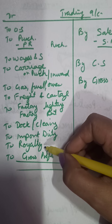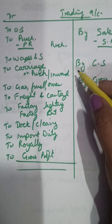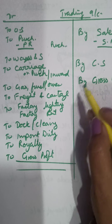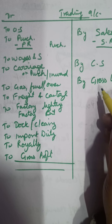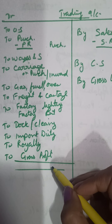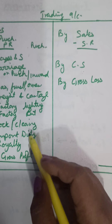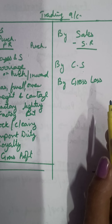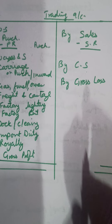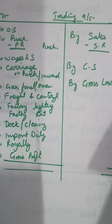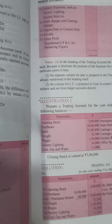Export duty is when goods have already been manufactured and we are exporting them, so that is not part of manufacturing. Import duty, however, is taken in the trading account. Royalty is a publishing or publication expense — we pay royalty to writers and authors. The difference between both sides: if sales and revenues are more it is called gross profit; if expenses are more it is called gross loss.